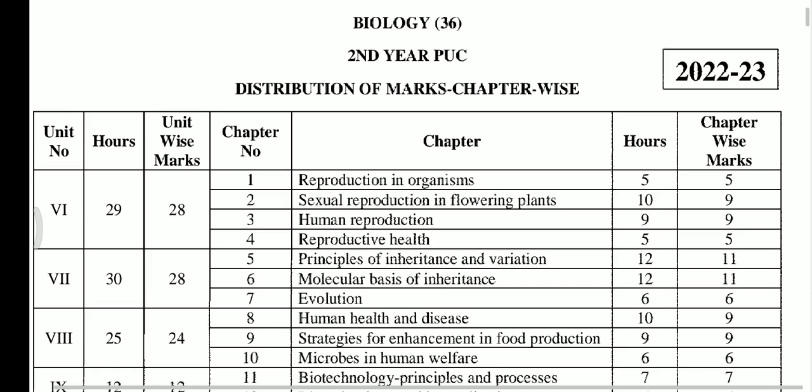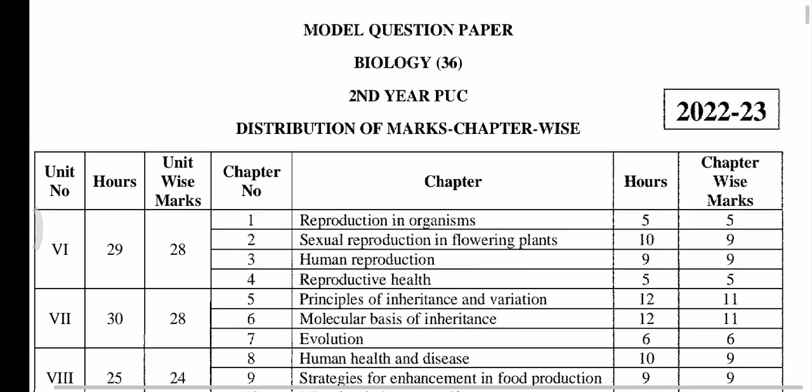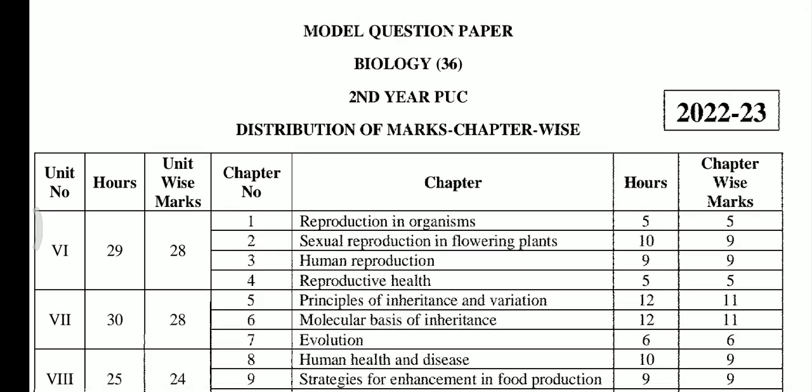Second year PUC students, good news for you — the PU Board has already released model question papers along with the blueprint copy. What is a blueprint? Let me discuss it first. Model question paper, Biology subject code 36, second year PUC: distribution of marks chapter-wise. Blueprint means you will get the weightage of each chapter here.